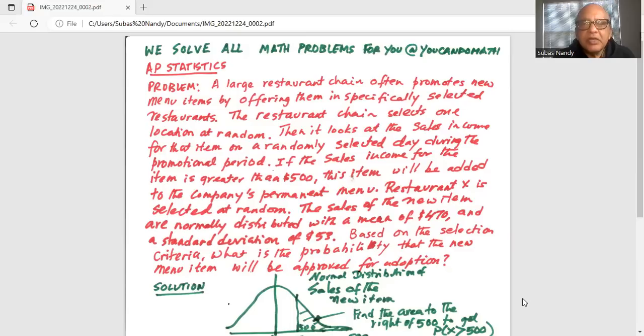A large restaurant chain often promotes new menu items by offering them in specifically selected restaurants. The restaurant chain selects one location at random, then looks at the sales income for that item on a randomly selected day during the promotional period.